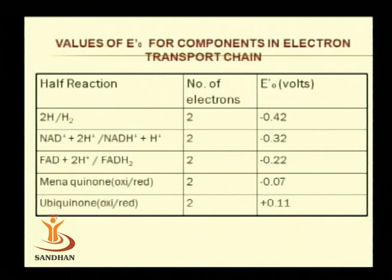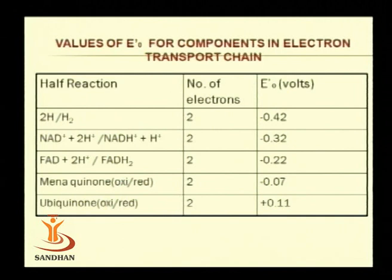Each carrier has its specific redox potential. Redox potential is the tendency of a substrate to undergo oxidation or reduction reaction — in other words, it is the relative voltage required to oxidize or reduce electrons in comparison to that of the hydrogen electrode. The normal redox value for the hydrogen electrode is minus 0.42.